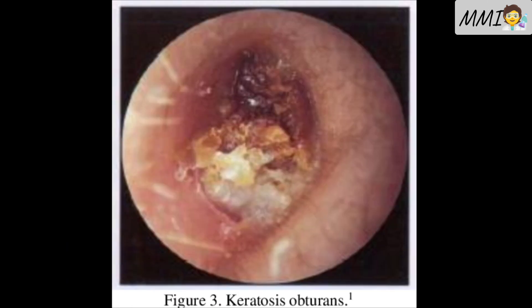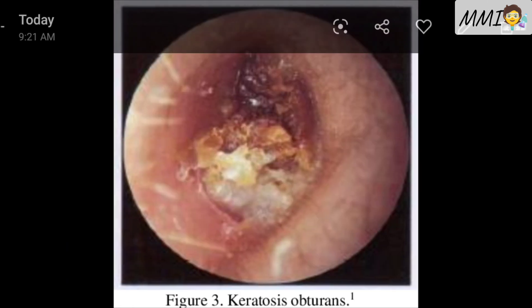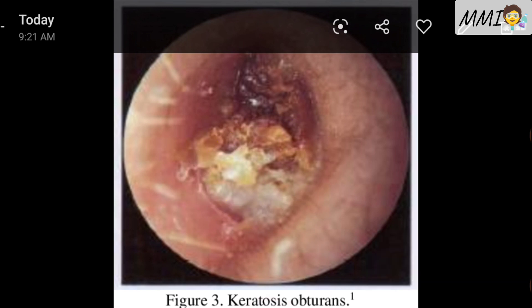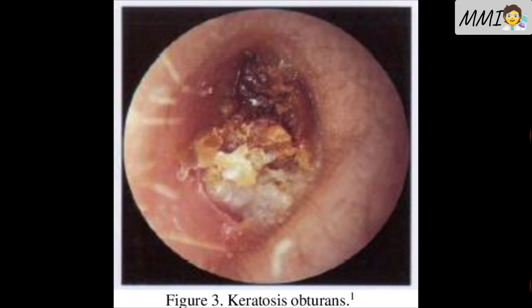Let me show you a picture of keratosis obturans. Here you can see the pearly white mass deposited in the deep meatus. Because of this deposition, the external auditory meatus gets widened.